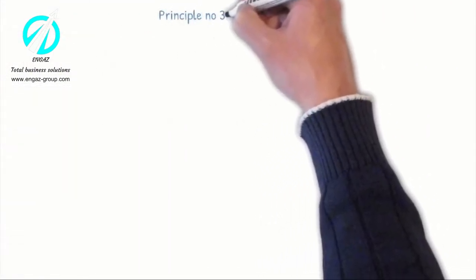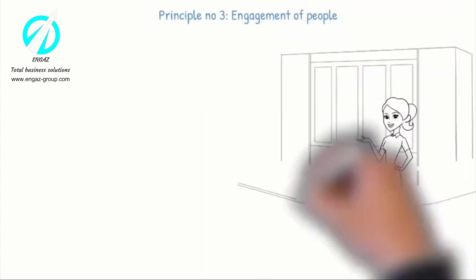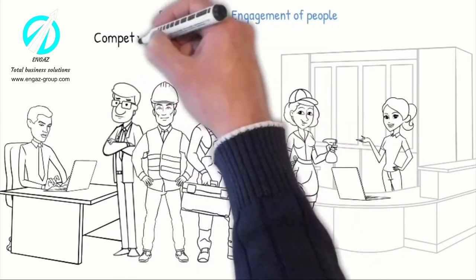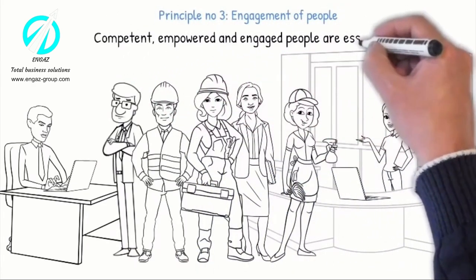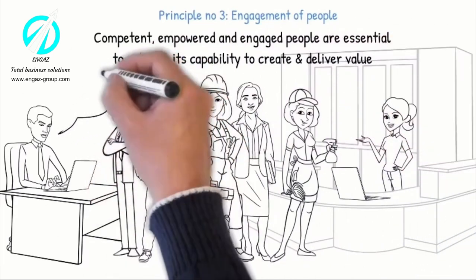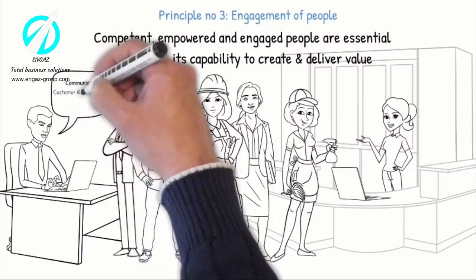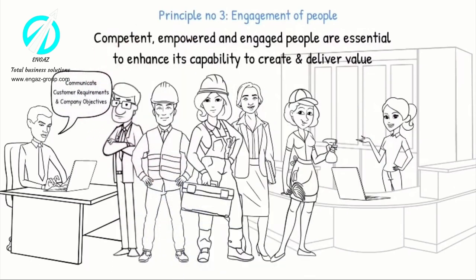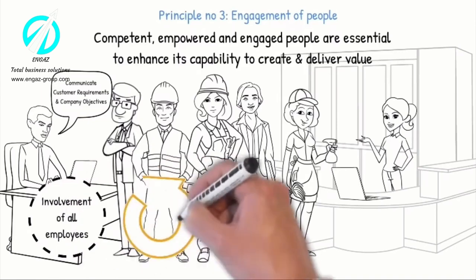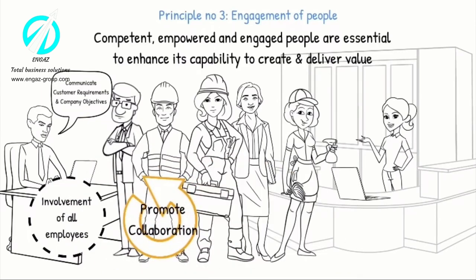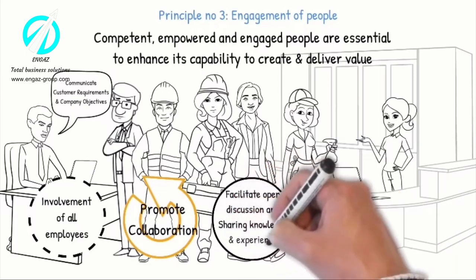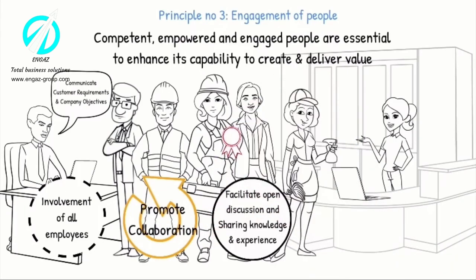Principle number three: Engagement of People. The organization recognizes that competent, empowered and engaged people are essential to enhance its capability to create and deliver value. Management communicates customer requirements and company objectives throughout the organization to ensure the involvement of all employees and to promote collaboration, facilitate open discussion and the sharing of knowledge and experience, and recognize and acknowledge people's contributions.